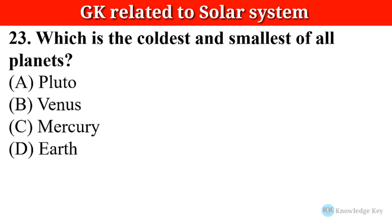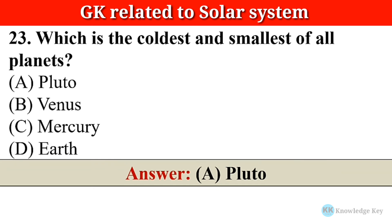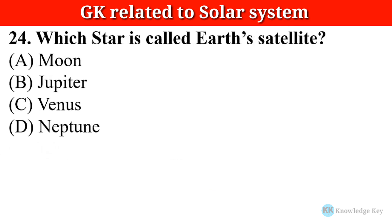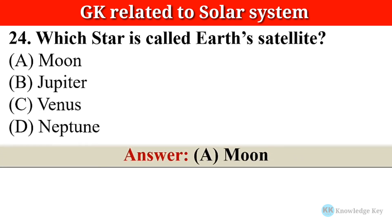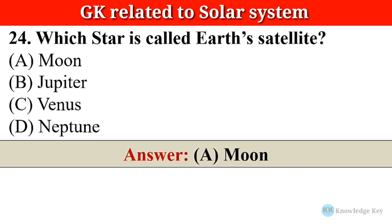Question number twenty-three: Which is the coldest and smallest of all planets? The correct answer is option A — Pluto. Question number twenty-four: Which star is called Earth's satellite? The correct answer is option A — Moon.